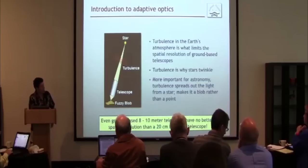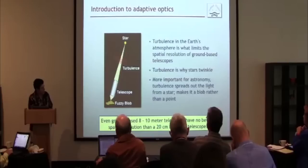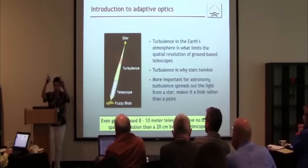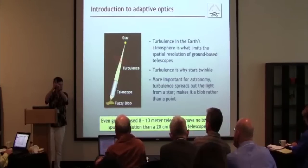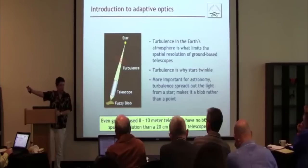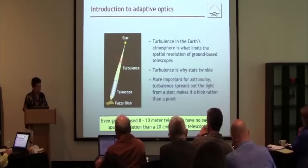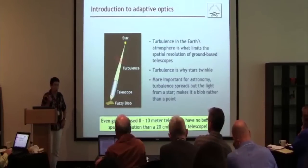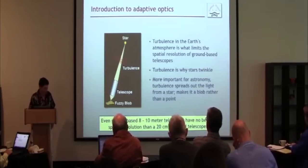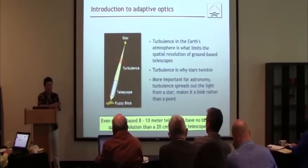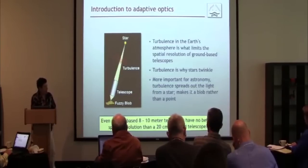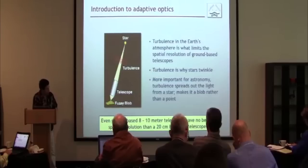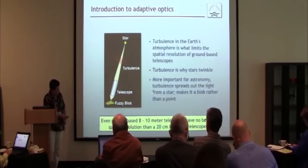Turbulence in the Earth's atmosphere is what limits the spatial resolution of a ground-based telescope. What is spatial resolution? You can imagine if I have two stars and I bring them closer and closer together, at some point you won't be able to tell that they're two stars — like car headlights at a distance that look like just one bright spot. Turbulence is why stars twinkle, but more important for astronomy, turbulence spreads out the light from a star and makes it a fuzzy blob rather than a point.